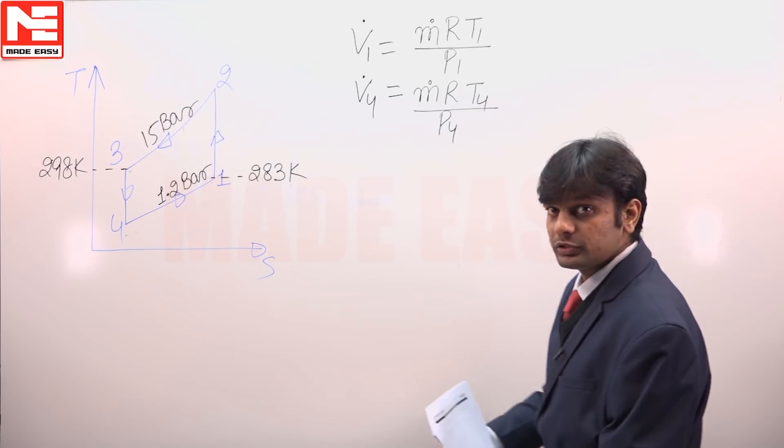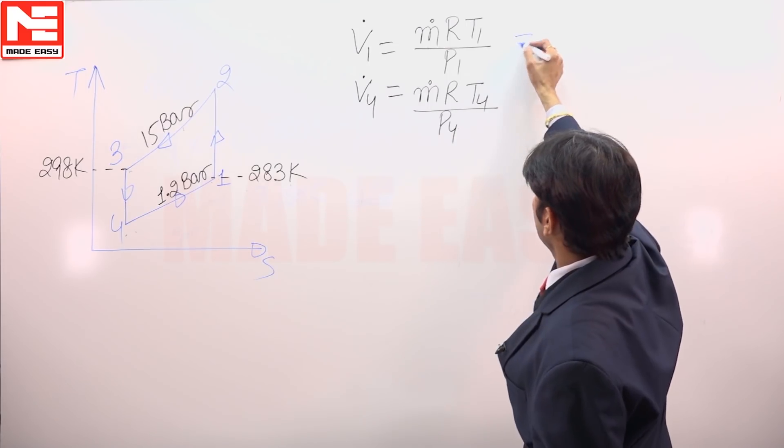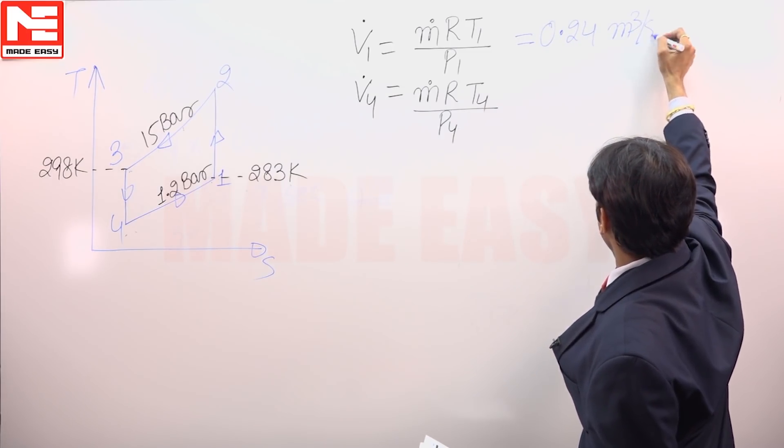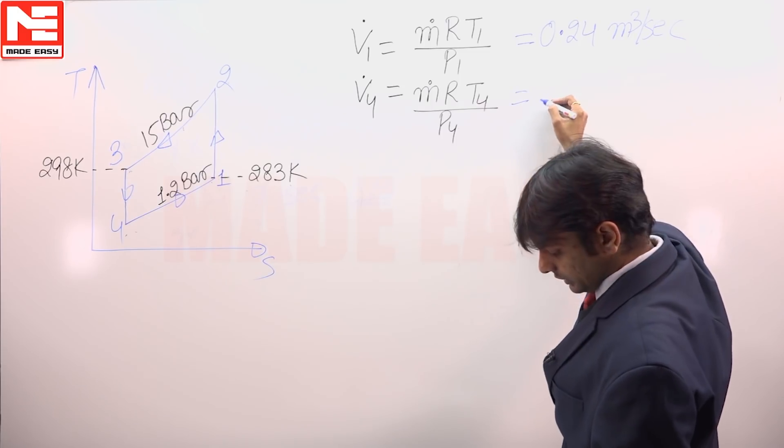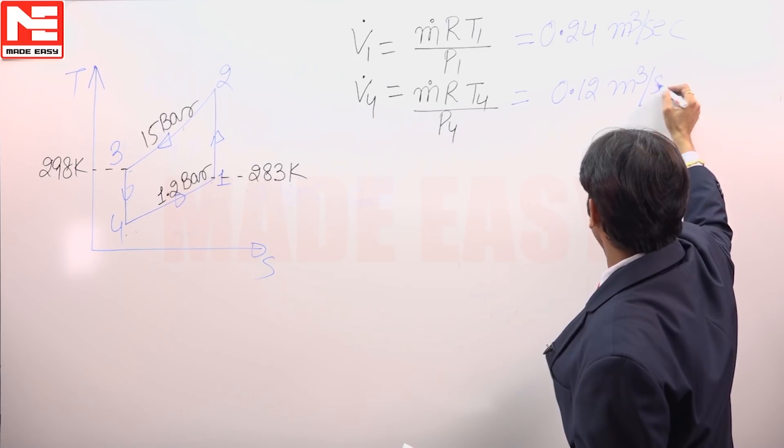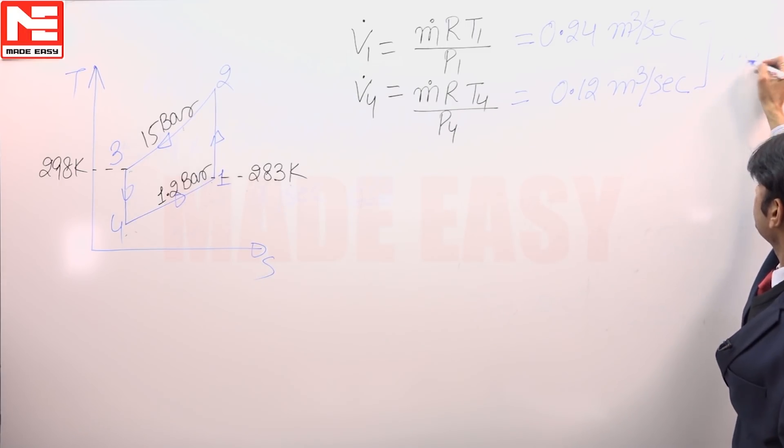After using all the parameters, we will get the values of volume flow rate as 0.24 meter cube per second at the inlet and 0.12 meter cube per second at the exit. These are the final answers.